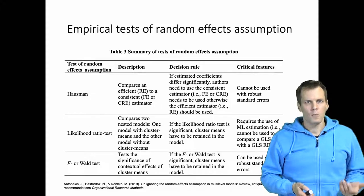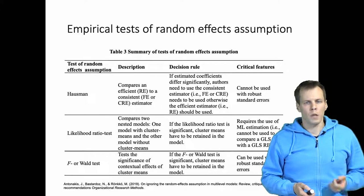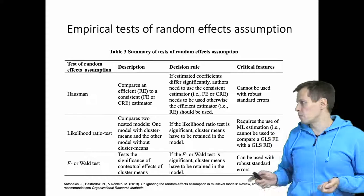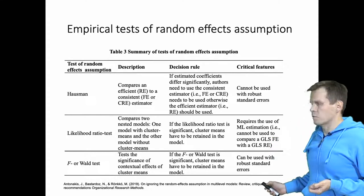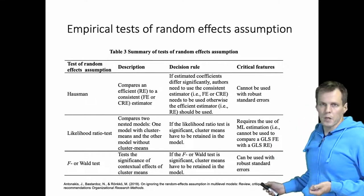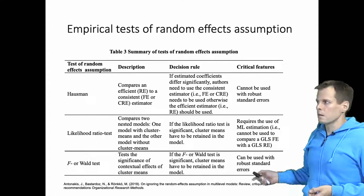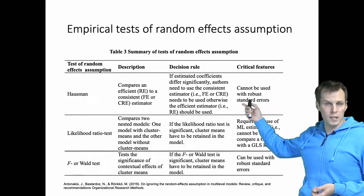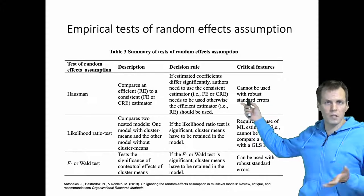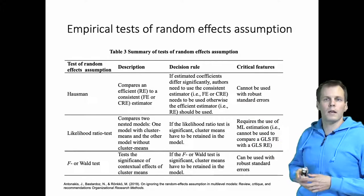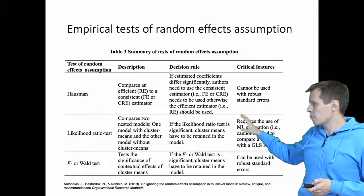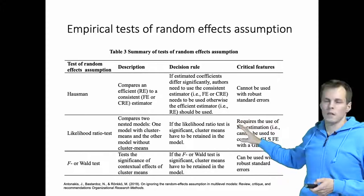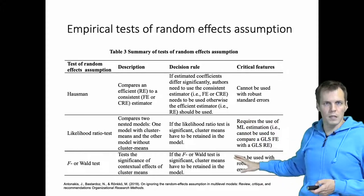The Hausman test is one of three ways of testing the random effects assumption discussed in our organizational resource methods paper. The Hausman test, being the most common, is listed first in the table, followed by the likelihood ratio test and the F or Wild test.